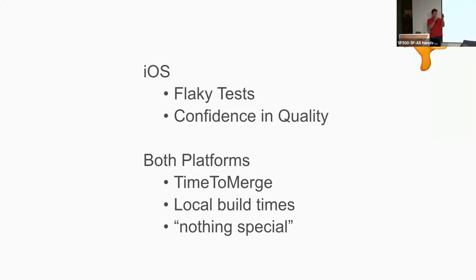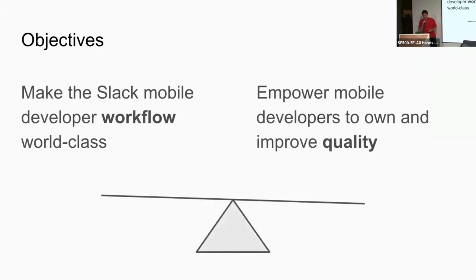We need to get more people into the 9 and 10 NPS category, not the 7 and 8. Our evergreen objectives reflect that we want to make the mobile developer workflow world class, while keeping an eye on quality and making sure developers own quality. One theme: our team isn't writing these tests — we're not responsible for quality directly. What we are responsible for is empowering feature teams to own their own quality. If feature teams own their quality, they can write their own automation and decide if things are good to go without feedback from manual QA.